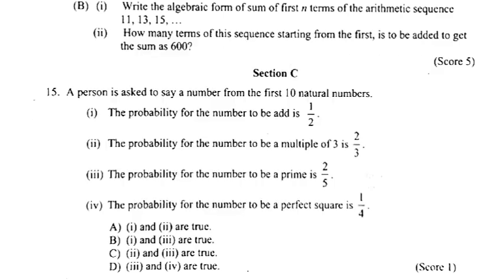15. A person is asked to say a number from the first 10 natural numbers. Answer: Option b. 1 and 2 are true.